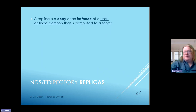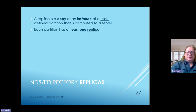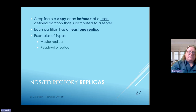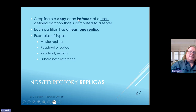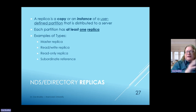A replica is a copy or an instance of a user-defined partition distributed to a server. Each partition has at least one replica. Examples include the master replica, the read-write replica, a read-only replica, and a subordinate reference. An instance means you have a clone of an existing partition—some type of a master replica—and any changes in one affect changes in the other. Any instance that's changed affects everything.